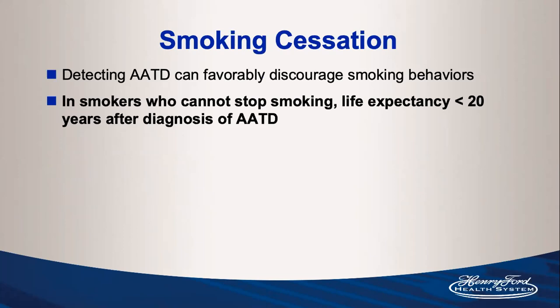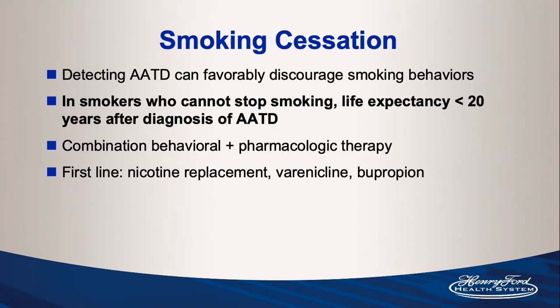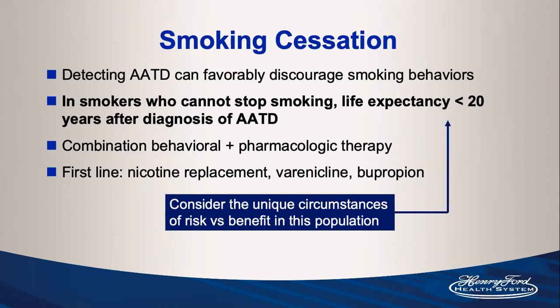Detecting alpha-1 antitrypsin deficiency can favorably discourage smoking behaviors. Patients should know that smokers with this disease who can't stop have a life expectancy of less than 20 years after diagnosis — a really striking statement. Preferred smoking cessation is combined behavioral and pharmacologic therapy; first-line agents include nicotine replacement, varenicline (Chantix), and bupropion. In this population the risk-benefit analysis strongly favors treatment, as this will be life-threatening sooner than for a typical smoker without alpha-1.